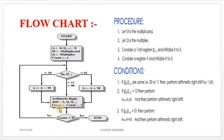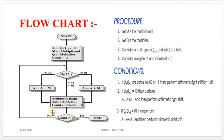After each automatic right shift, the count decrements by 1. Starting from 4, it goes to 3, then 2, then 1, then 0. When the count reaches 0, the operation moves to the end of the Booth Multiplication.